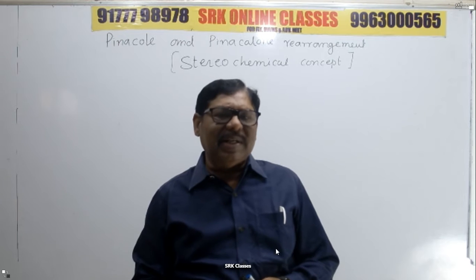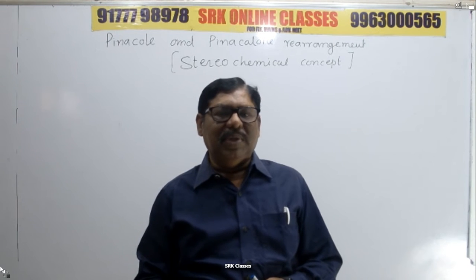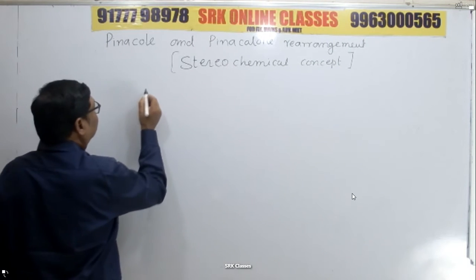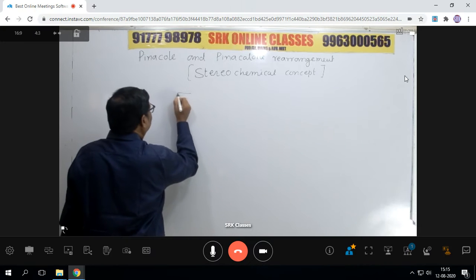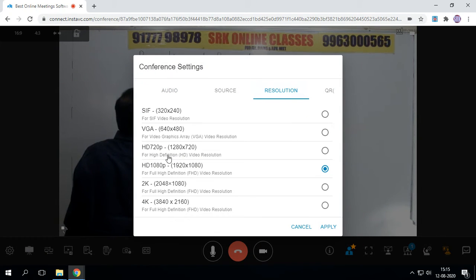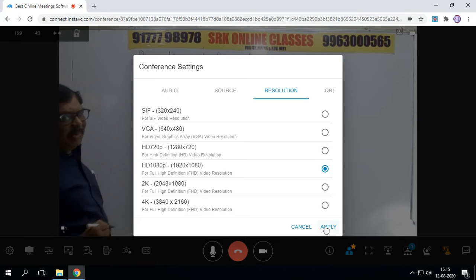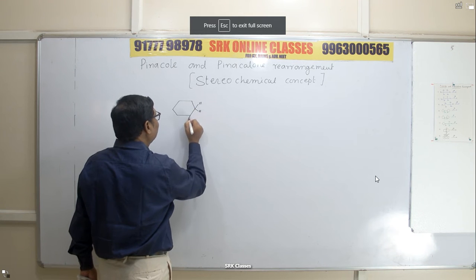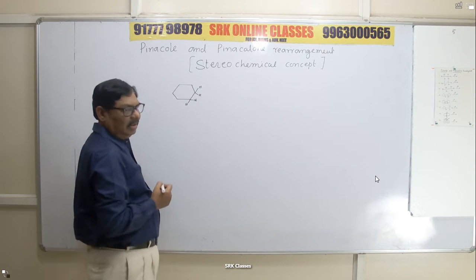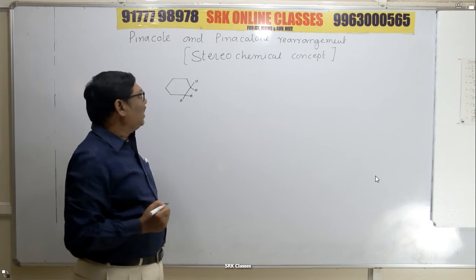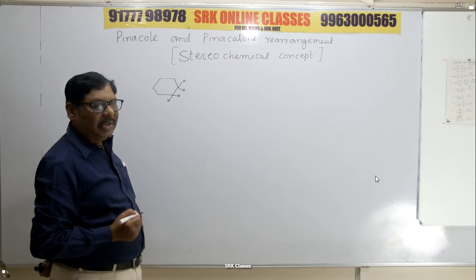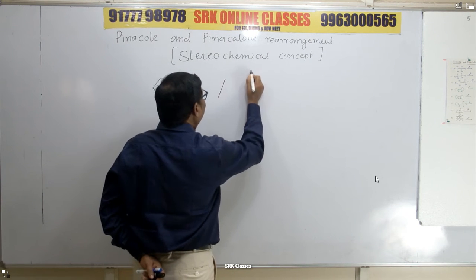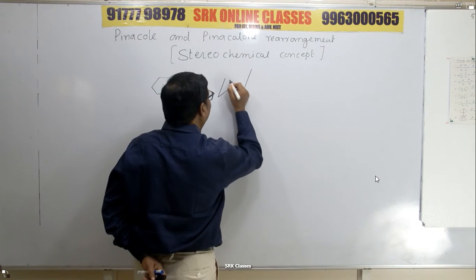Before that, let us concentrate on the basics of cyclohexane structure. Cyclohexane structure is not planar. Normally we used to write cyclohexane with all six carbon atoms in one plane, but originally cyclohexane is not a planar structure. It exists in the form of a chair and different conformations. The chair form is the most stable conformation of cyclohexane.